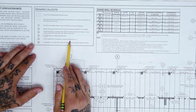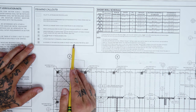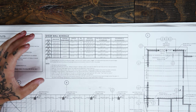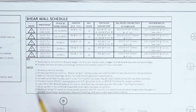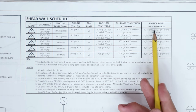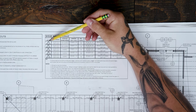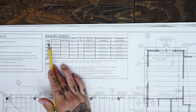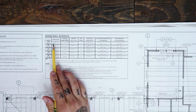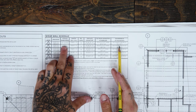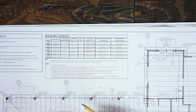Now we're on to the shear wall schedule — typically where most people learn how to read plans. Inside the triangles we have numbers one through five, with columns for sheathing, studs at panel edges, nailing, edge nailing, field nailing, sill plate, top plate connector, sill plate connection at subfloor, and anchor bolts at foundation. Starting with number one: 15/32-inch plywood or OSB on one side, double 2x minimum at panel edges, 8D nails at 6 and 12 — the most common pattern. Sill plate is 2x material. Top plate connector is A35 at 18-inch on center to the truss, or 16D at 6-inch on center for blocking.